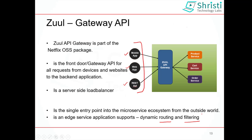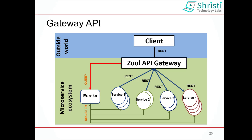Here is a bigger picture of the Zuul gateway API in a microservice ecosystem. We have a Eureka service registry and 4 microservices — 3 instances of service 1, 2 instances of service 2, 2 instances of service 3, and 4 instances of service 4. All services have registered themselves to the Eureka service registry. The client is the outside world — it can be a mobile app, a web app, or a REST API integration. Zuul acts as a single point of entry, and it also has to register itself to the Eureka service registry. Whenever the client wants to connect to the microservice ecosystem, it can do so only through Zuul, which connects to the appropriate microservice by doing a lookup in the Eureka service registry.